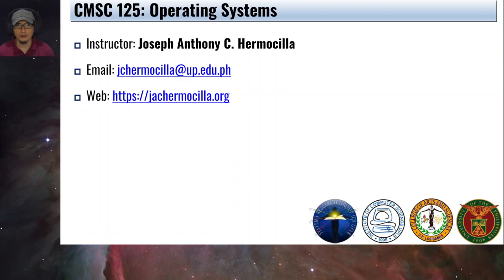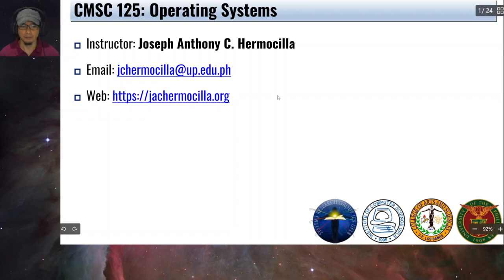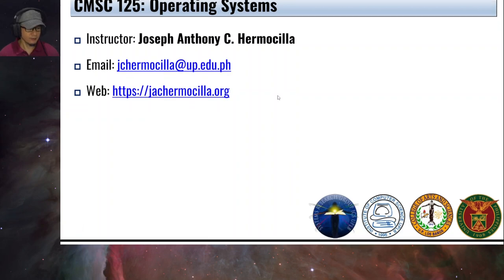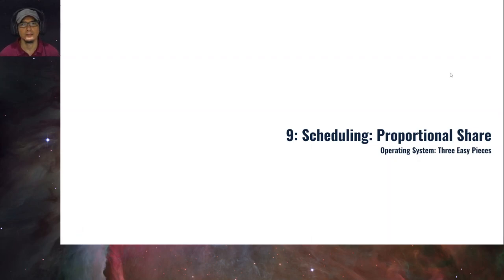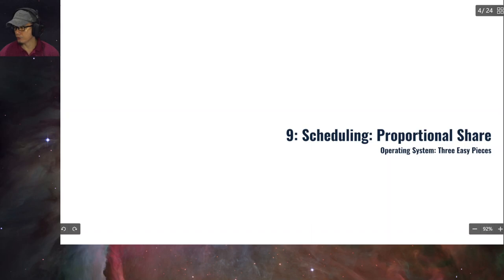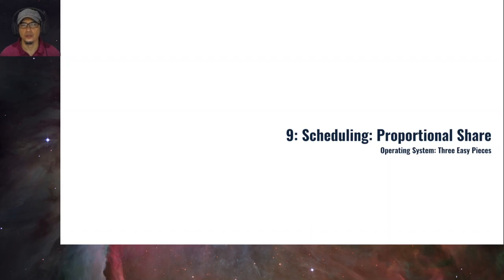Hello students, welcome to another video lecture for CommSci 125 Operating Systems. In this chapter we're going to look into proportional share scheduling. But before we proceed, let's have a short review of what we discussed in the previous video. In the previous video we focused on the MLF queue, or multi-level feedback queue, wherein the processes are assigned to specific queues and there are multiple queues.